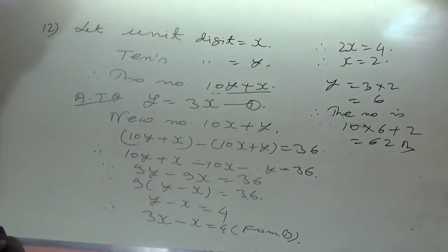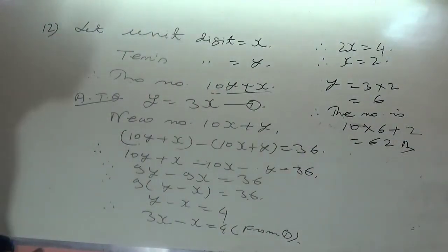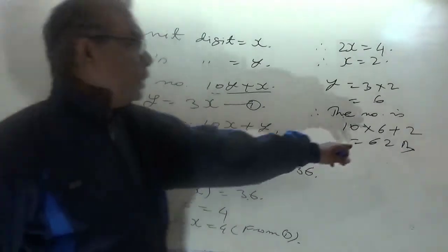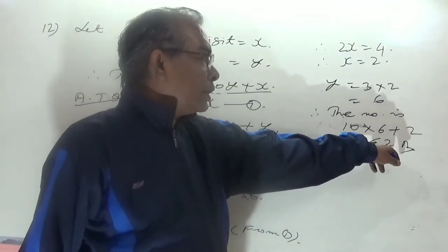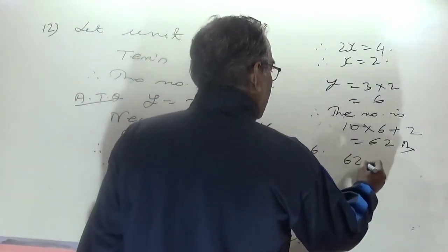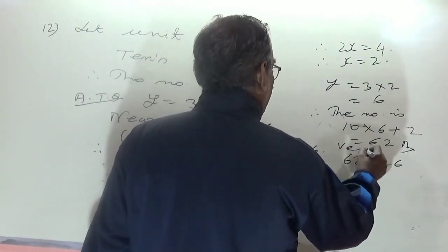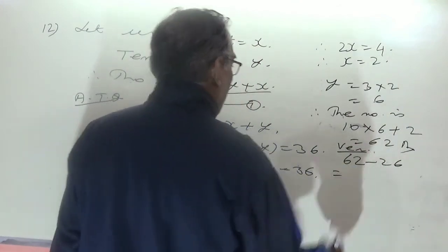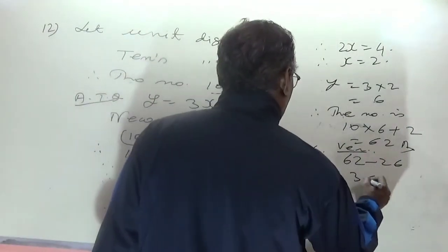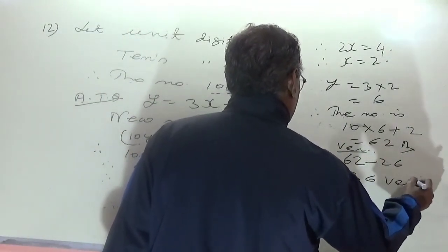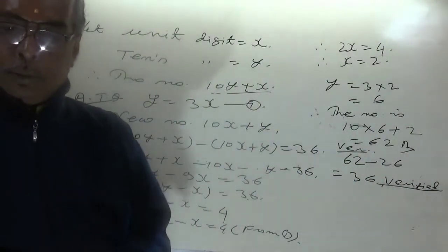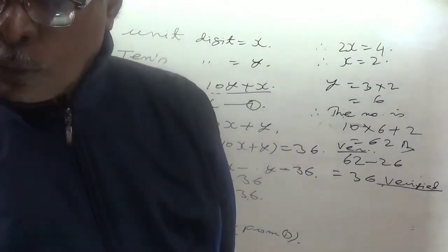Verification: the tenth digit 6 is indeed 3 times the unit digit 2. And reversing: 62 − 26 = 36, confirmed. The answer to question 12 is 62.